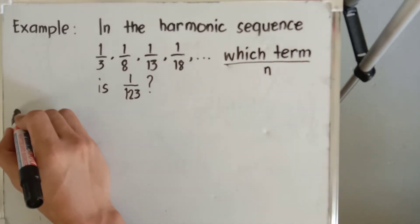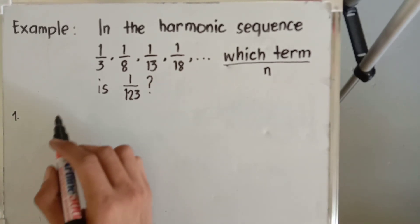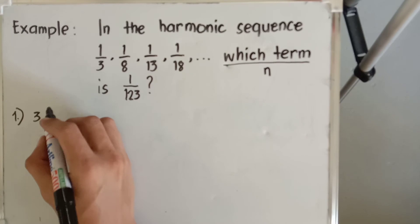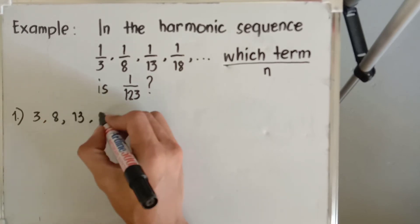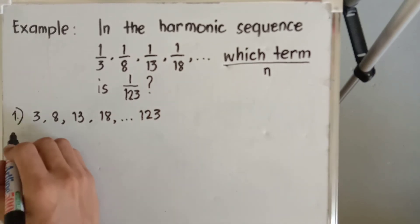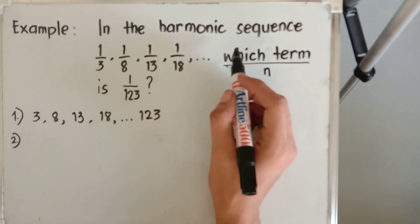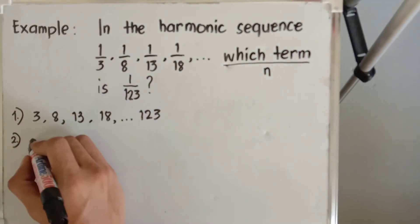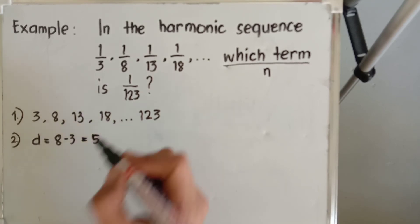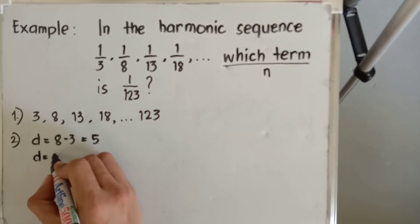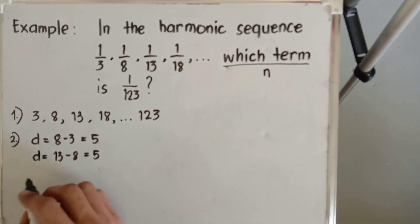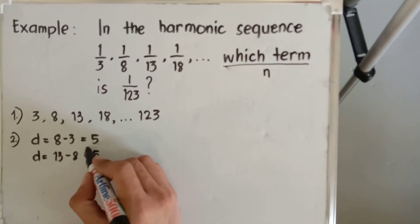The very first step is to always get the reciprocal of all the terms in the harmonic sequence. So the reciprocal of one-third is three, one over eight is eight, we have thirteen, eighteen, and so on until one hundred twenty-three. The common difference is: eight minus three equals five. Checking: thirteen minus eight also equals five. Therefore, the common difference is equal to five.